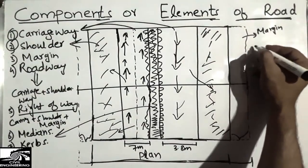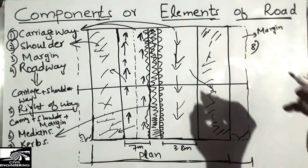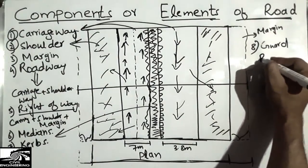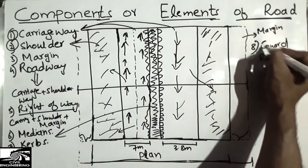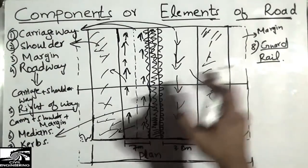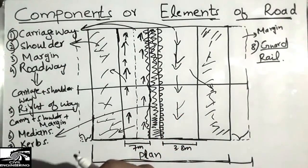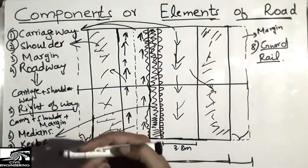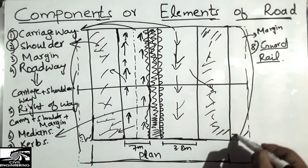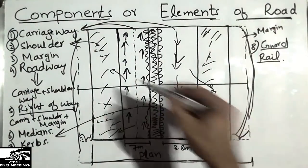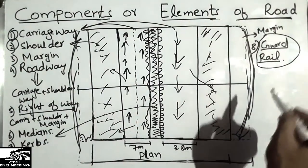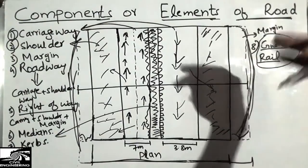The second-to-last component is the guard rail. Guard rails are very important and are provided mainly in hilly areas. They are provided to support vehicles and protect them from accidents. You will see in images that rails are provided at the last portion of the road. We call these guard rails, and they are provided to guard road vehicles.